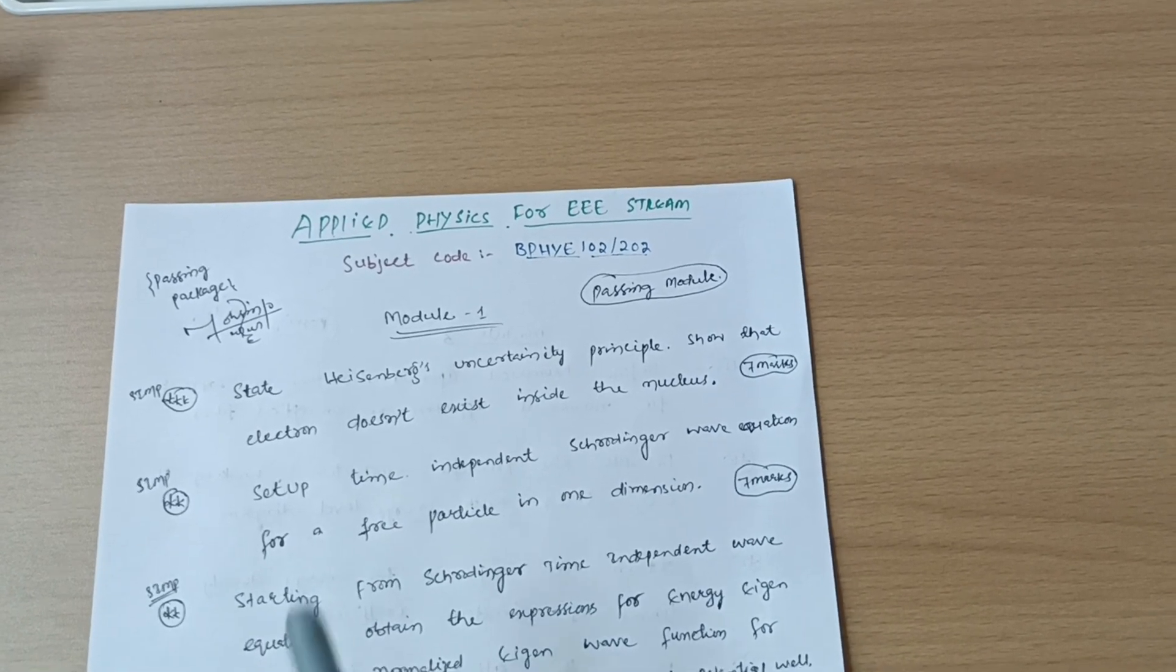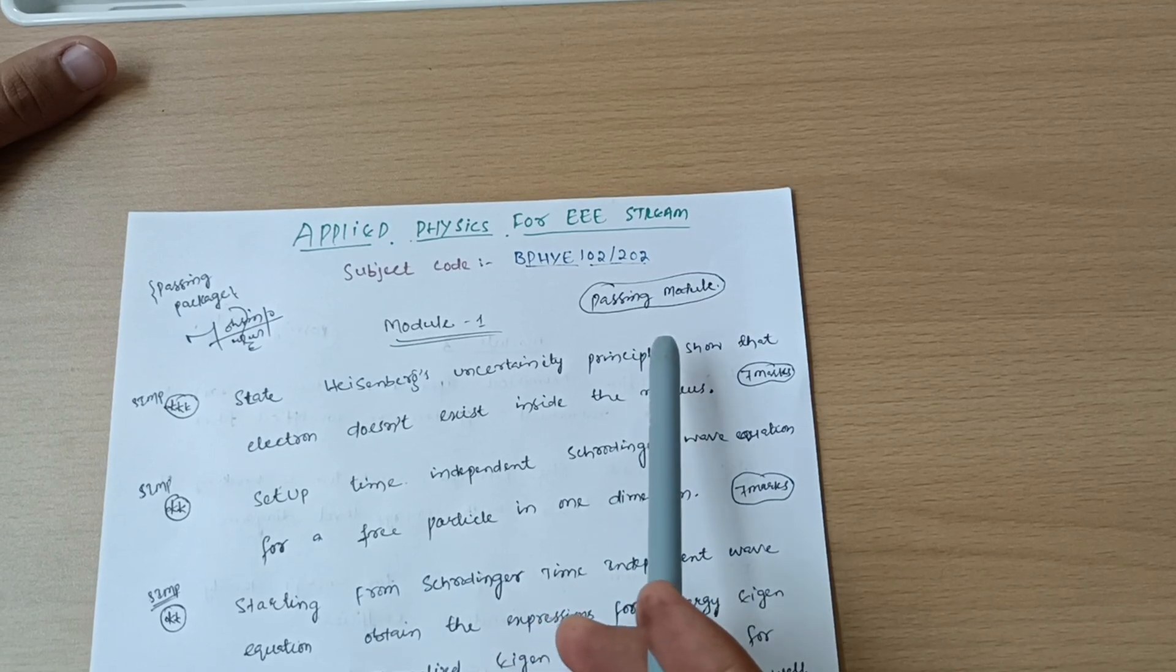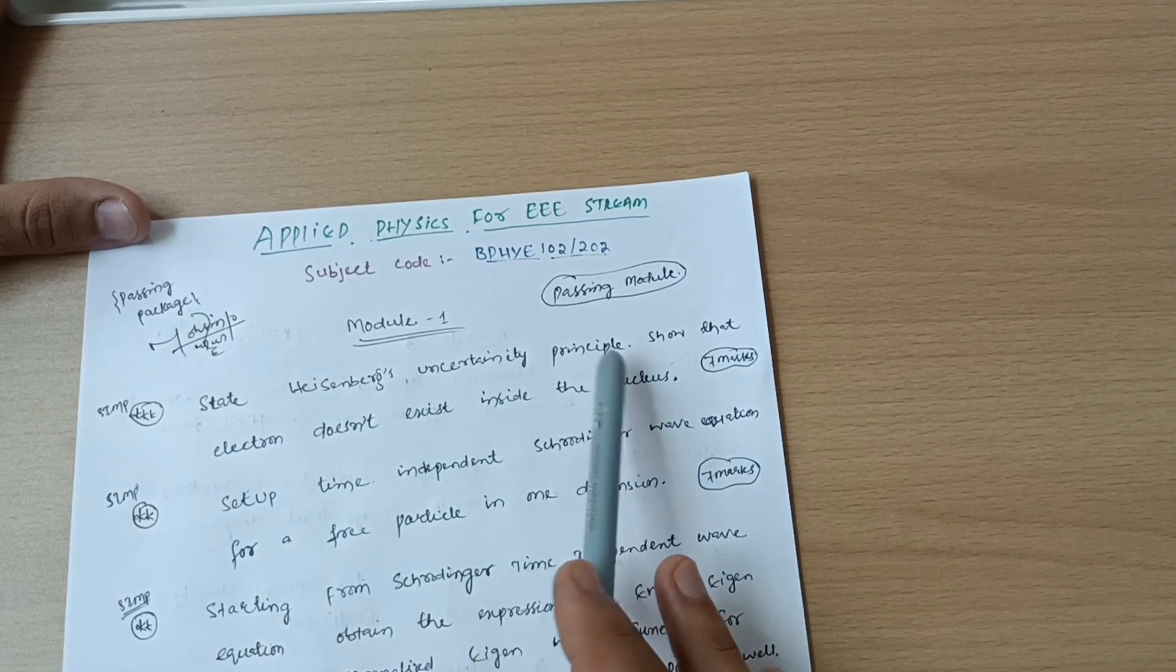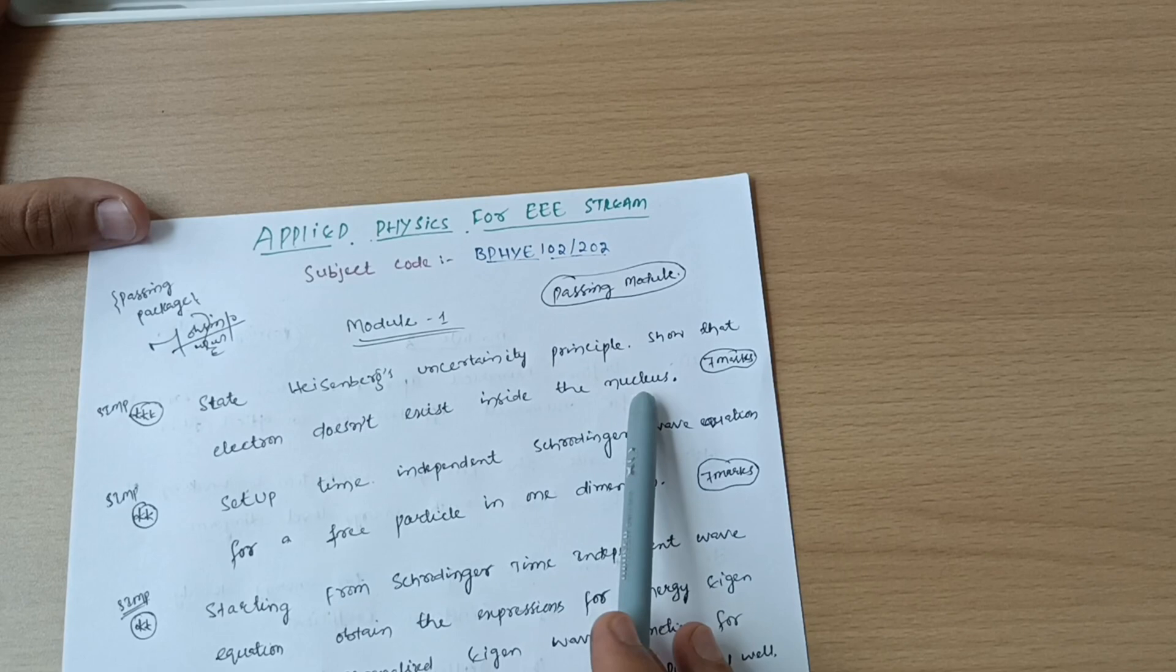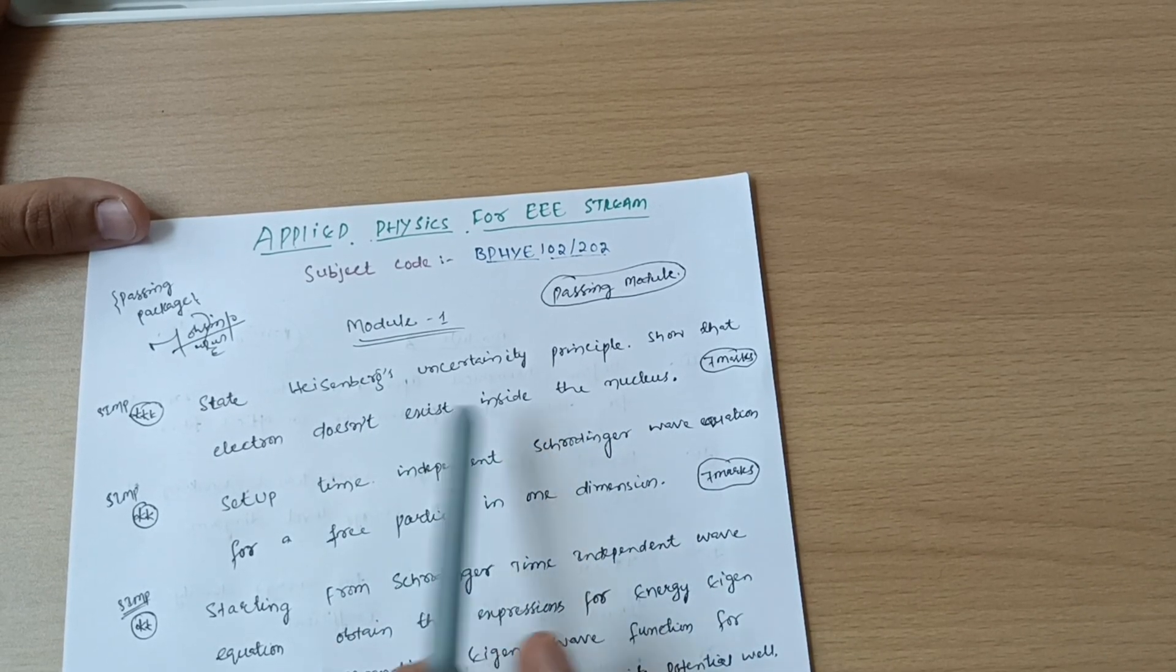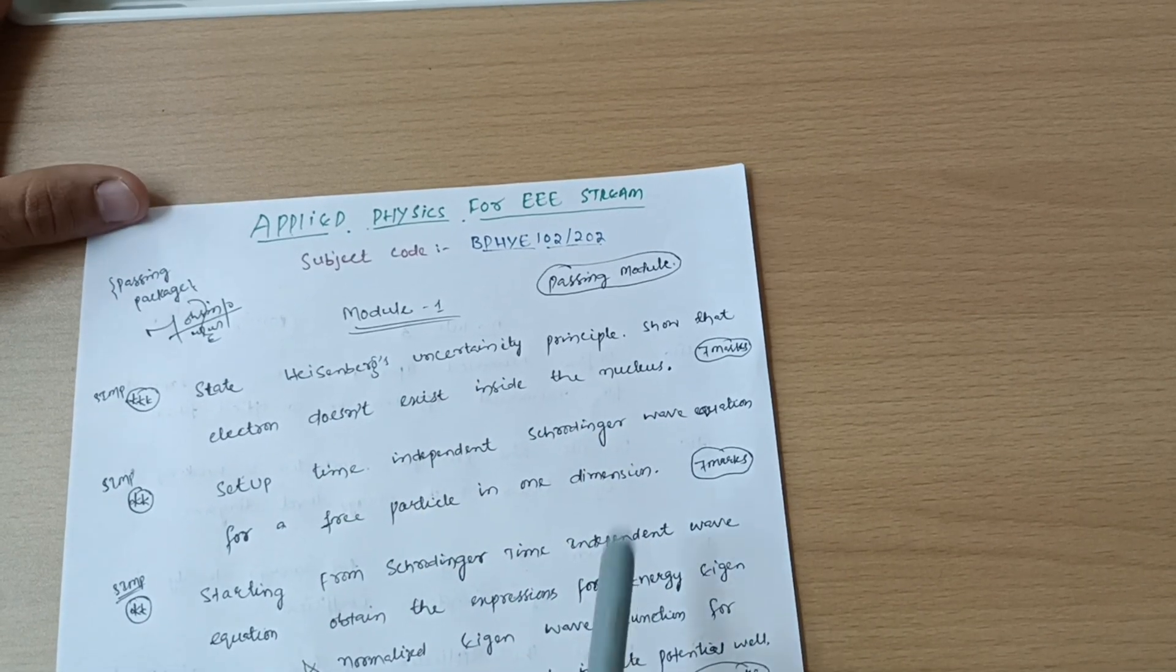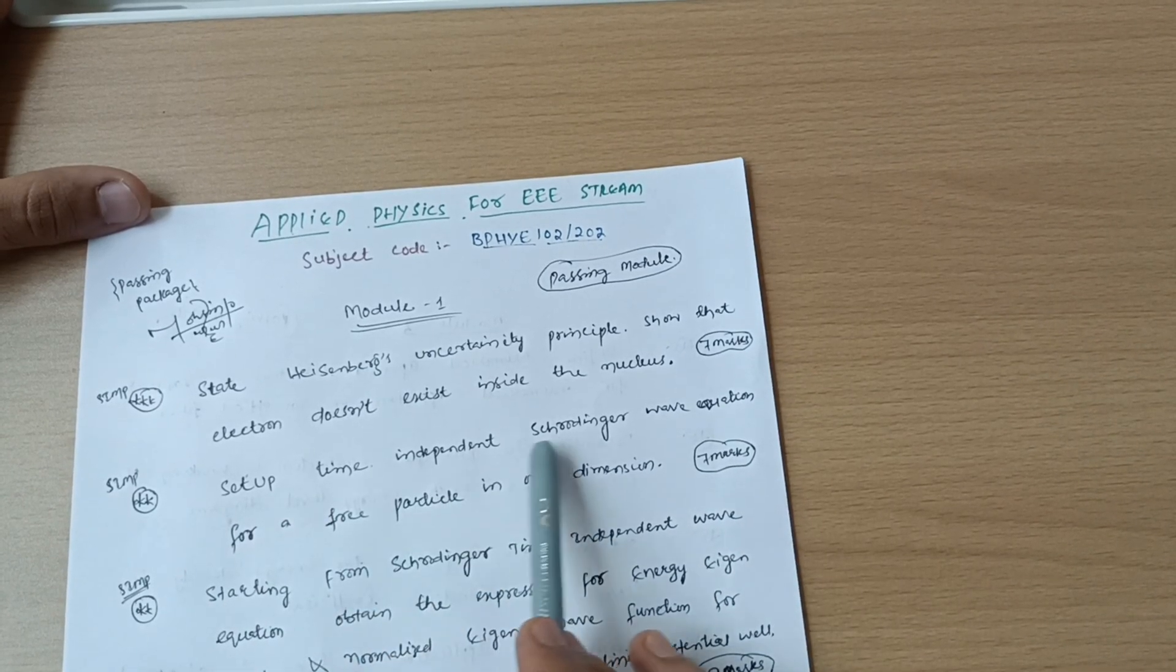First of all, let me discuss here the module first which is the passing module and very easier one in which you have to focus on super important questions like state Heisenberg's uncertainty principle and show that electron doesn't exist inside the nucleus. Sometimes they will ask you to show non-existence of an electron inside the nucleus using Heisenberg's uncertainty principle. This is the most important question, it may be seven marks.